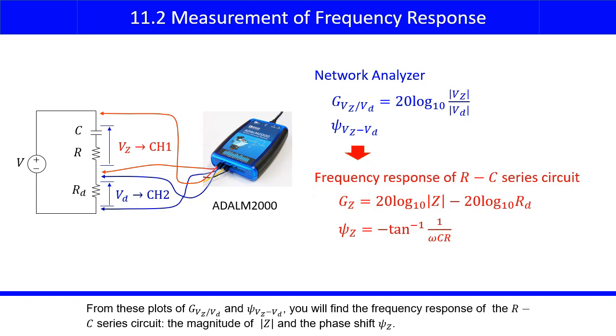From these plots of GVZ over VD and psi VZ relative to VD, you will find the frequency response of the RC series circuit, the magnitude of the absolute value of Z and the phase shift of psi Z.